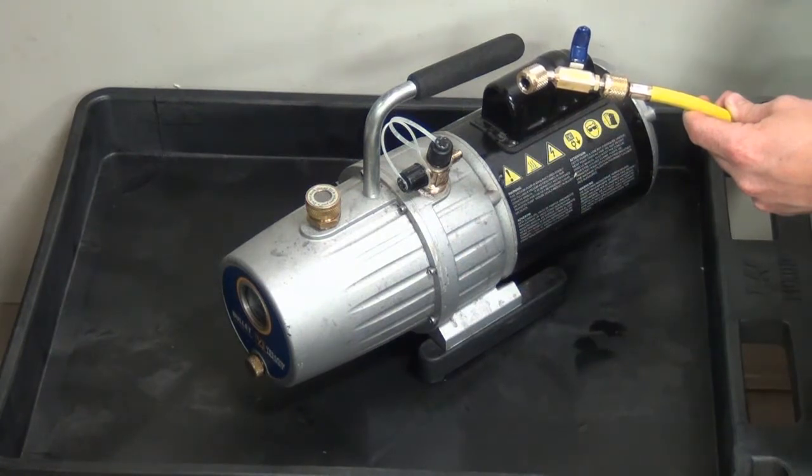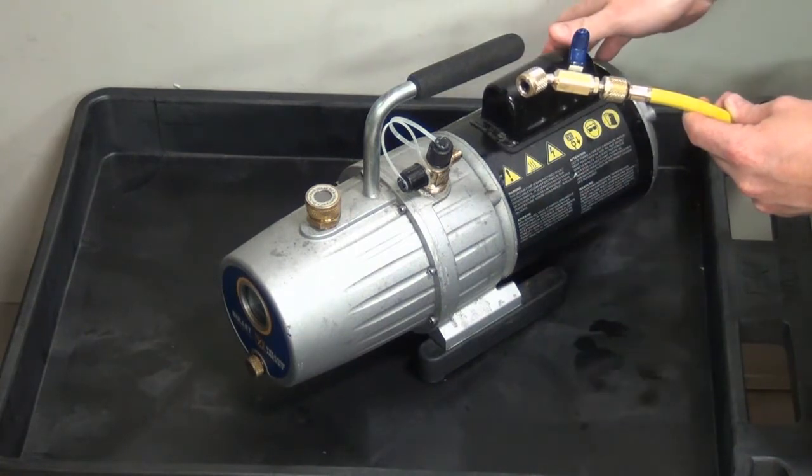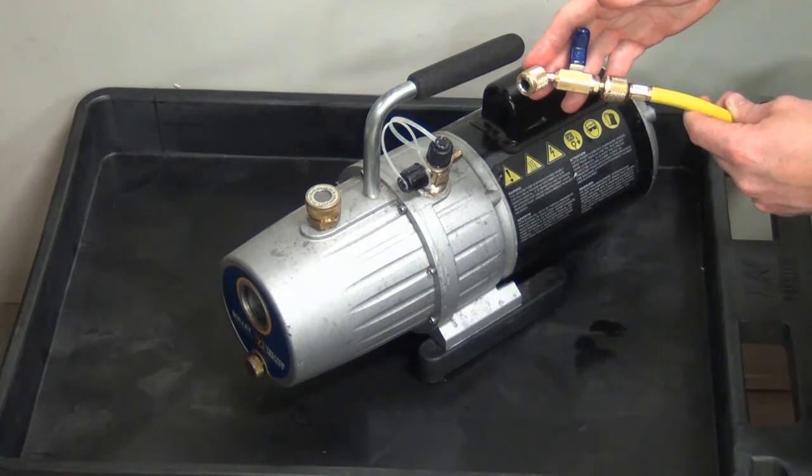Even a system vacuum level of 10 to 15 inches of mercury can be enough to create oil suck back if the pump is connected before being powered on. With that said, it is best practice to power on the vacuum pump before connecting it to the system.